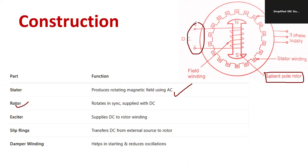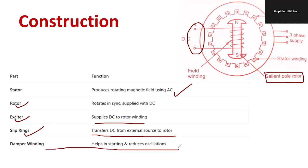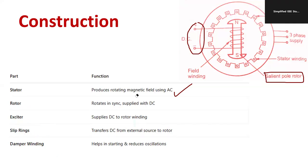DC supply is provided at the rotor so the rotor speed and rotating magnetic field speed get locked. The exciter supplies DC to the rotor winding so it becomes electromagnetic. Slip rings transfer DC from the external source to the rotor. There is also damper winding, which helps in starting — starting is a major challenge for synchronous motors — and it minimizes oscillations. The field winding is located at the rotor.